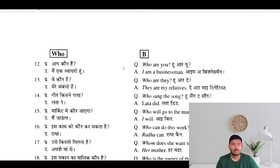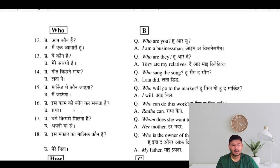Use of 'who': Aap koon hain — who are you? We koon hain — who are they? Gita kisne gaaya — who sang the song? Market mein koon jayega — who will go to market? Is kaam ko koon kar sakta hai — who can do this work?